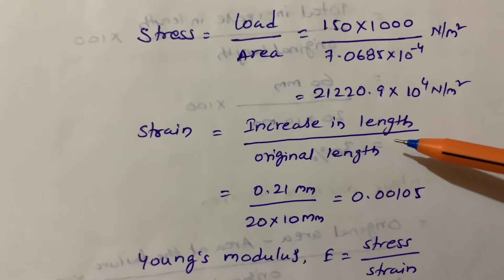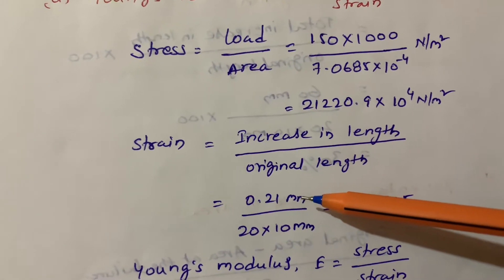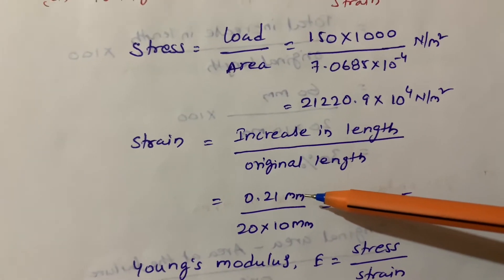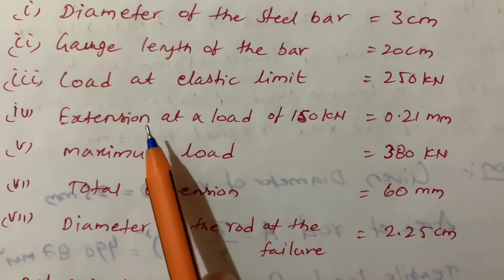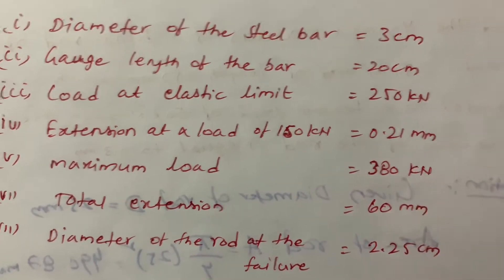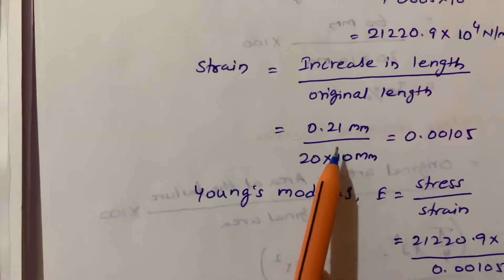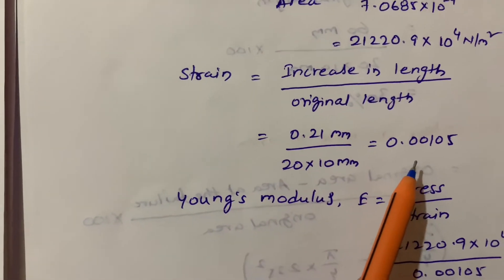For strain, increase in length by original length. The increasing length is 0.21 mm which is given in the question. This is the extension at the load of 150 kN, and 200 mm is the original length.